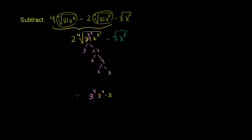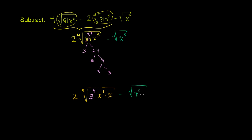Taking the fourth root of all of this is the same thing as taking the fourth root of each factor separately. Of course I have a 2 out front. And then x to the third can be written as x squared times x, so it's minus the principal square root of x squared times x. I broke it up this way because x squared is a perfect square. This is the same thing as the fourth root of 3 to the fourth, times the fourth root of x to the fourth, times the fourth root of x.